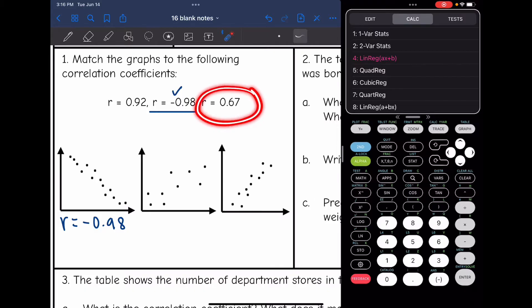Then we have 0.67 and 0.92. So 0.67 is going to be not as strong, and then 0.92, that's going to be a pretty strong correlation. This second one would be 0.67, since it's moderately strong. But this last one is definitely a stronger correlation, so that would be 0.92.